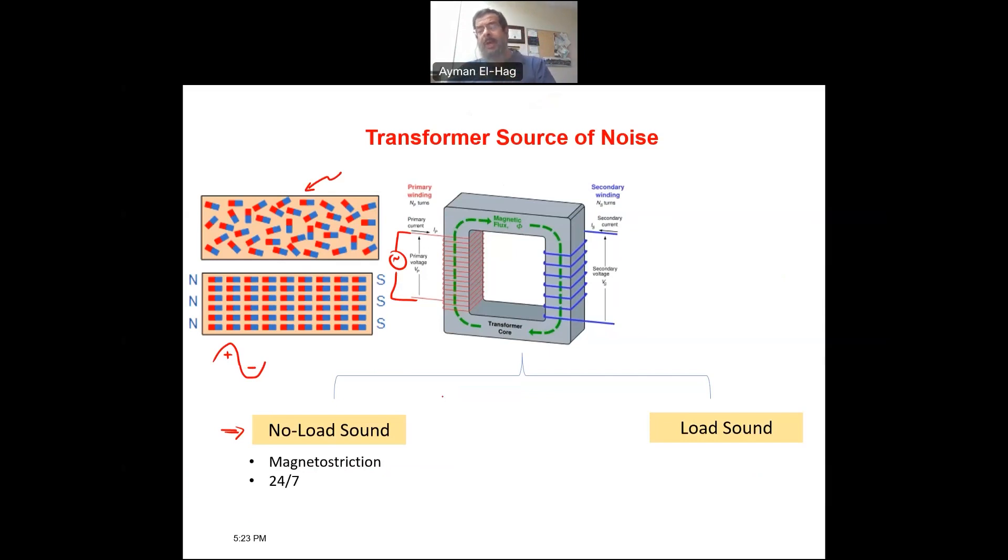But there is also another source of noise coming from the load current this time. And as we explained before, when the transformer is subjected to a short circuit there will be some very strong mechanical force that could be very destructive to the extent it damages the winding mechanically. Now here we are not talking about a fault. We are talking about a high level of current. So this will lead to strong magnetic force which will cause again vibration to the structure of the winding of the transformer.